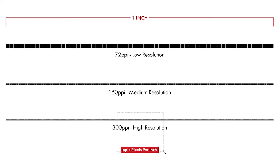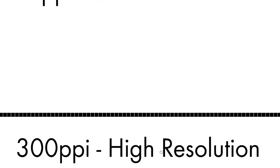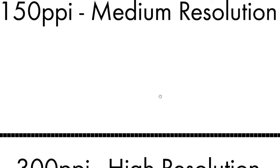Let me just enlarge that so you can see that there are indeed squares there. You'll see here's the medium res pixels and here's the high res pixels — so much, much smaller. 300 pixels in an inch is tiny. Anyway, let's get into Photoshop now and I'll show you how this relates to the images there.